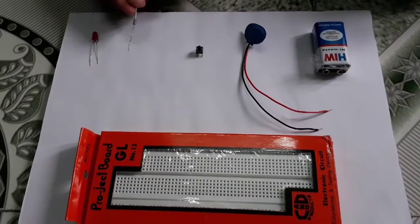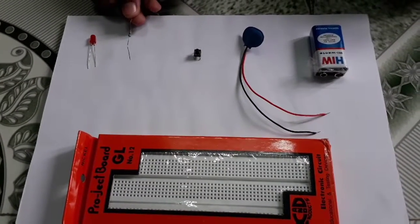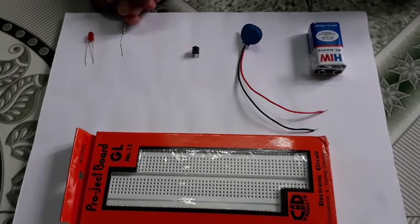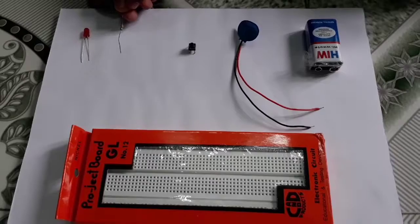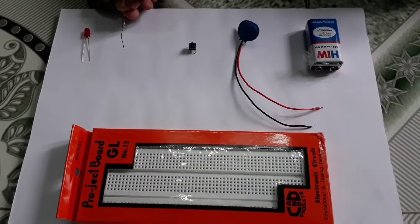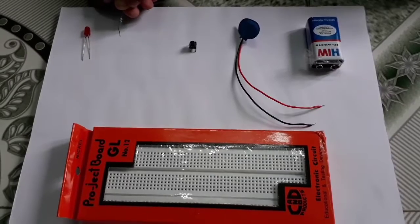This is a resistor. We are using a 330 ohm resistor. Resistors oppose the flow of current. There are two types of resistors: fixed resistors and variable resistors. We are using a fixed resistor.